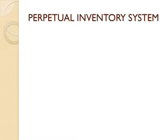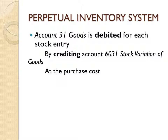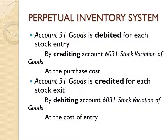For a perpetual stock system, the entity will debit account 31 for each stock entry by crediting account 6031 at the purchase cost of the goods intended to be sold at their current state without any conversion. Any time goods leave stock to be sold, account 31 will be credited for each stock exit by debiting the stock variation of goods account 6031. This double entry is made at the cost of entry, which is the purchase cost of the goods. A separate video presentation will cover how to arrive at the purchase cost.